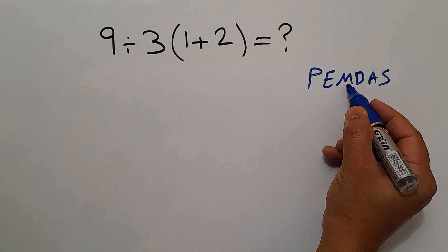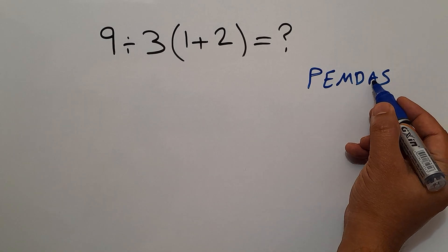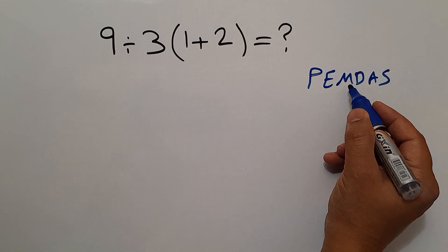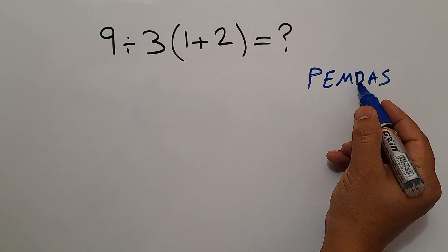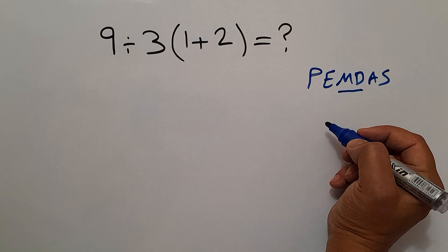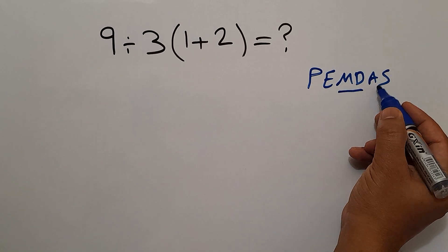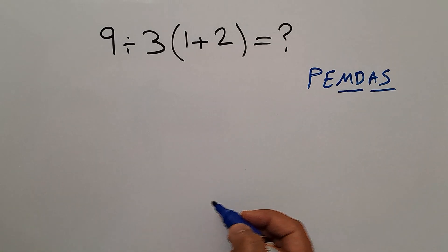then exponents, then multiplication and division, and finally addition and subtraction. Remember that multiplication and division have equal priority, and we have to work from left to right. And the same applies to addition and subtraction. So,